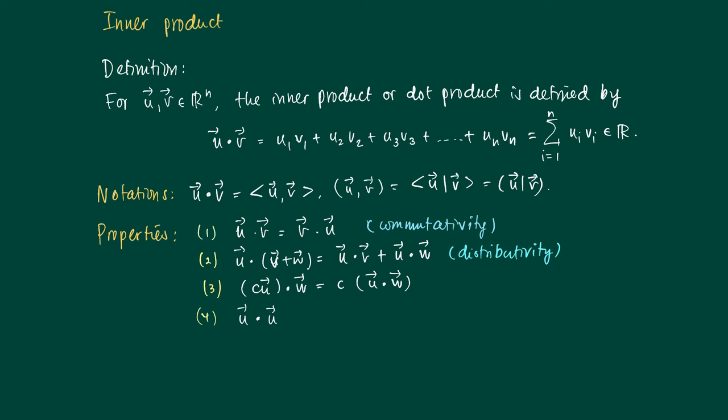The dot product of u with itself: you see it's the sum if we use this sum notation over here. You get the sum of i is 1 to n of ui times ui, so it's the sum of squares.